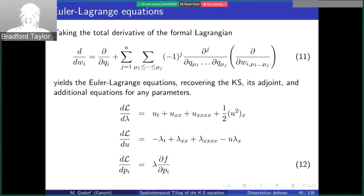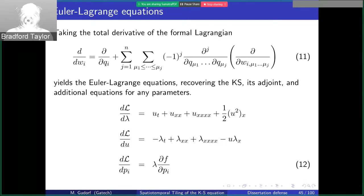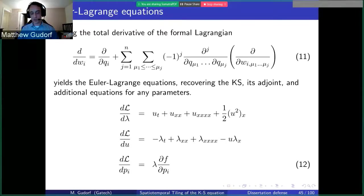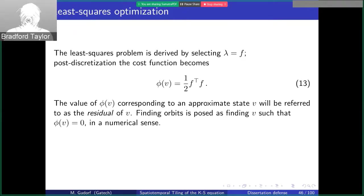If we take these total derivatives, we recover the Kuramoto-Sivashinsky equation, its adjoint equation, and some equations with the partial derivatives of the parameters. After making the choice λ equals F — the Kuramoto-Sivashinsky equation — doubly periodic solutions become solutions to the least-squares optimization problem, where I define a cost function φ as the inner product of F transpose and F. The doubly periodic solutions which satisfy F equals zero also satisfy φ equals zero.